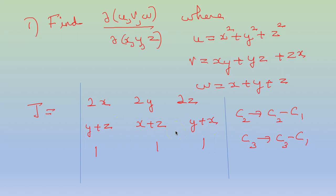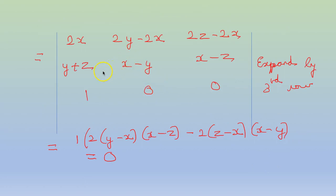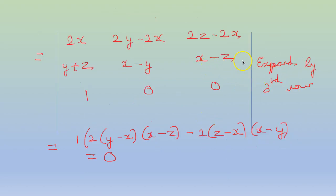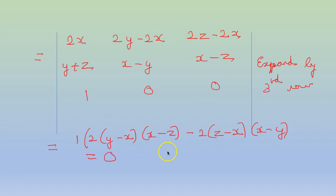Now we do elementary row and column operations for the determinant. If we do c2 minus c1 and c3 minus c1, the first column remains the same. The second column becomes 2y minus 2x, x minus y, 0, and c3 minus c1 gives 2z minus 2x, zx minus z, 0. Expanding by the third row, we get 2y minus 2x into x minus z, minus x minus y into 2z minus 2x. These two expressions are equivalent and cancel, so the value of the Jacobian is 0.